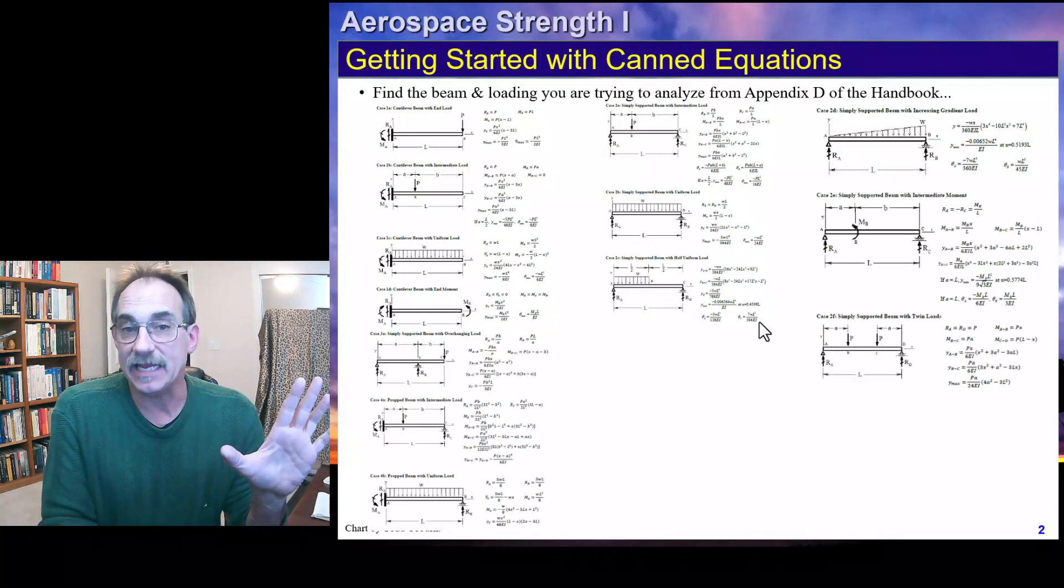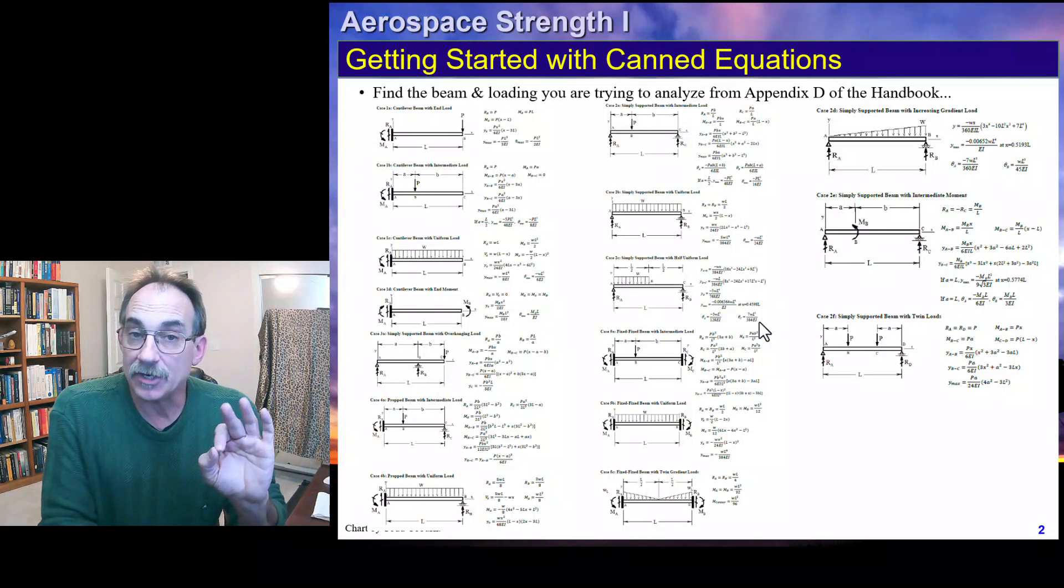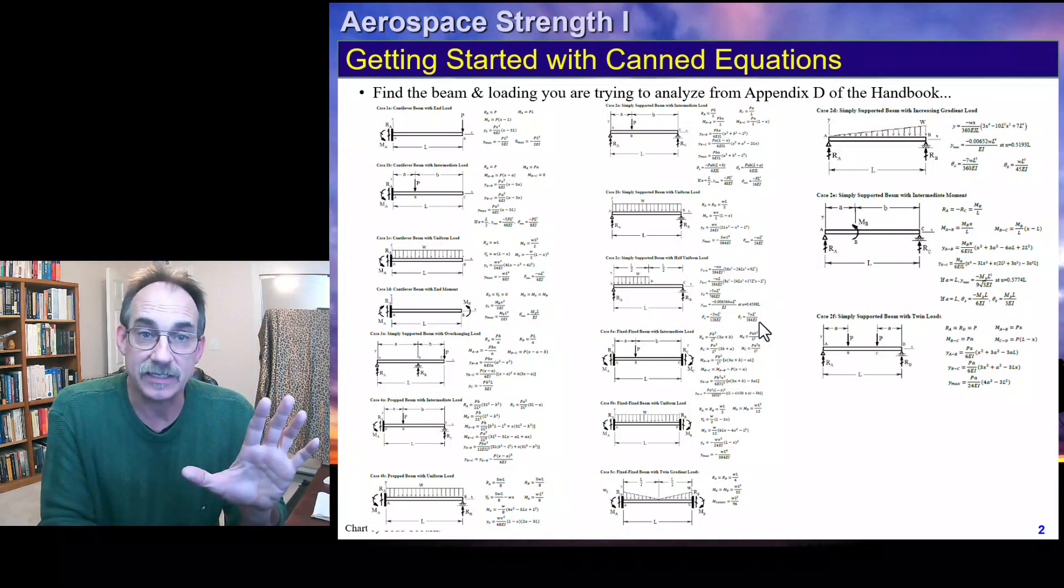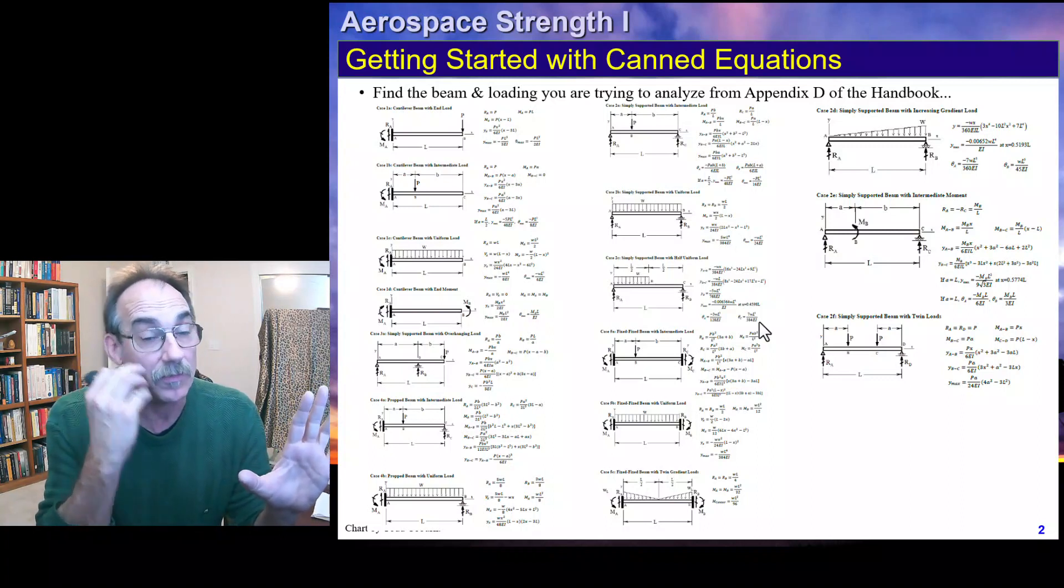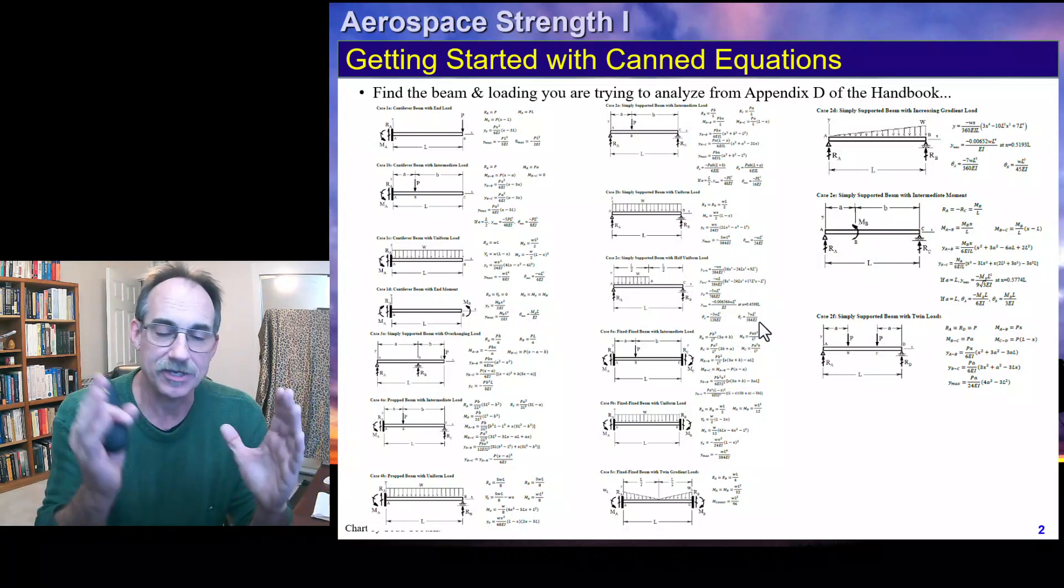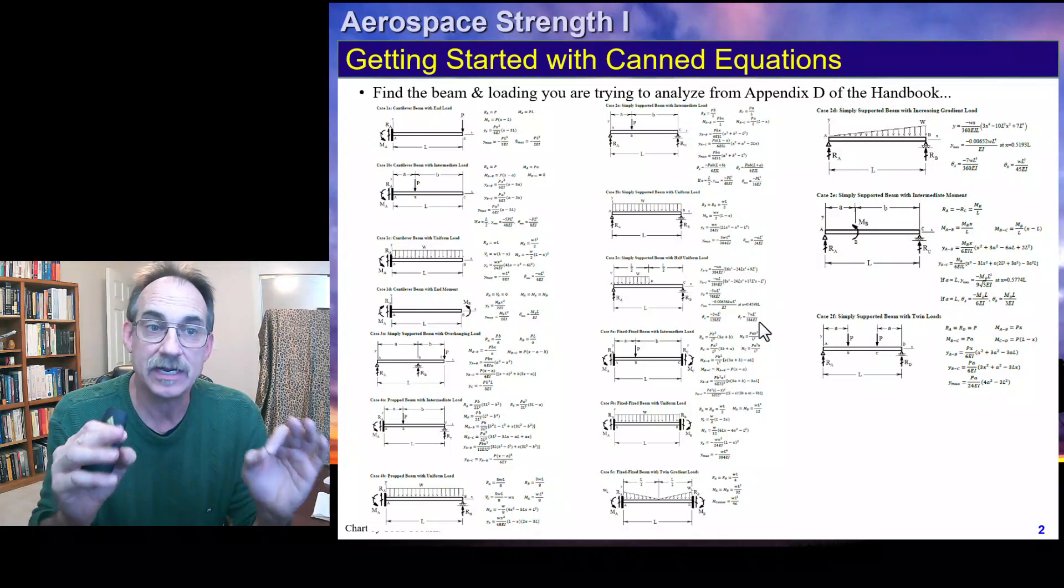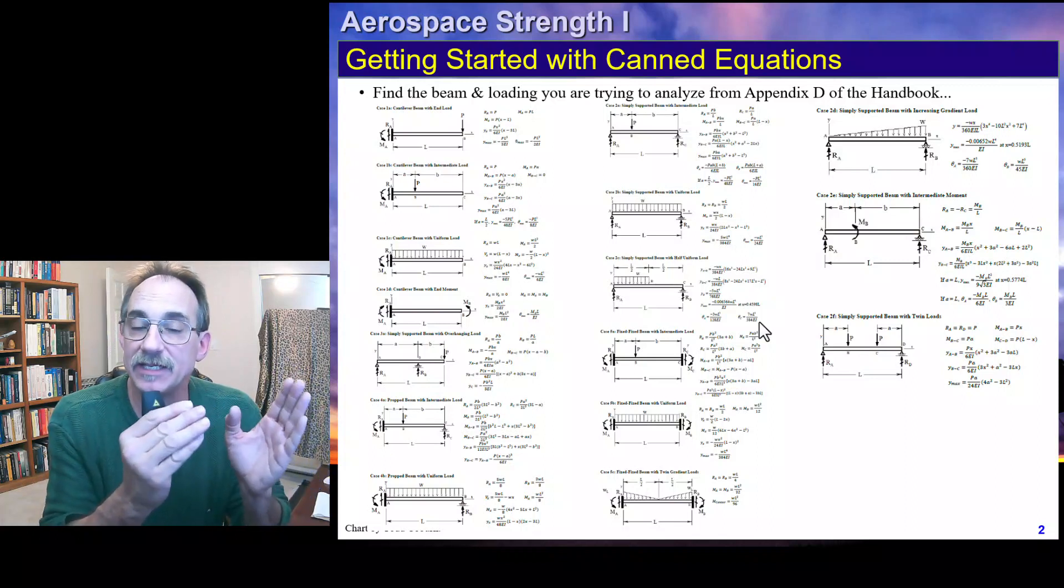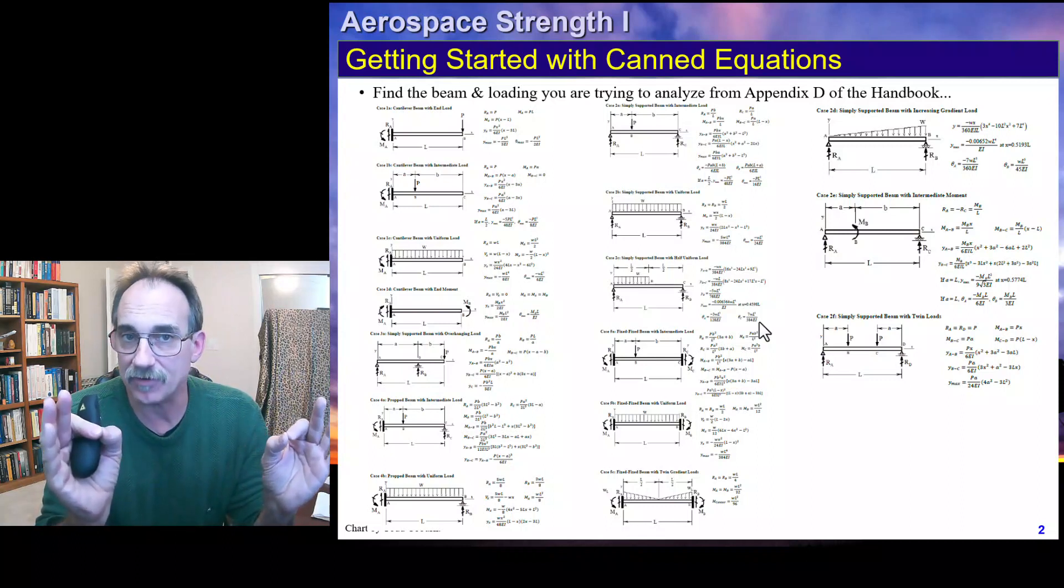It's Appendix D in the Aerospace Strength Handbook, and these are some of the choices. Many undergraduate textbooks on structural mechanics or strength of materials will have maybe three to five choices. More comprehensive books will often have more. What you're going to do when you want to use a canned function is first you're going to look at your own structure, idealize it as a beam with constraints and external loads, and then you're going to look among the cases that are available to find out if you have the constraints that you have for your beam, and then secondarily the external loads.